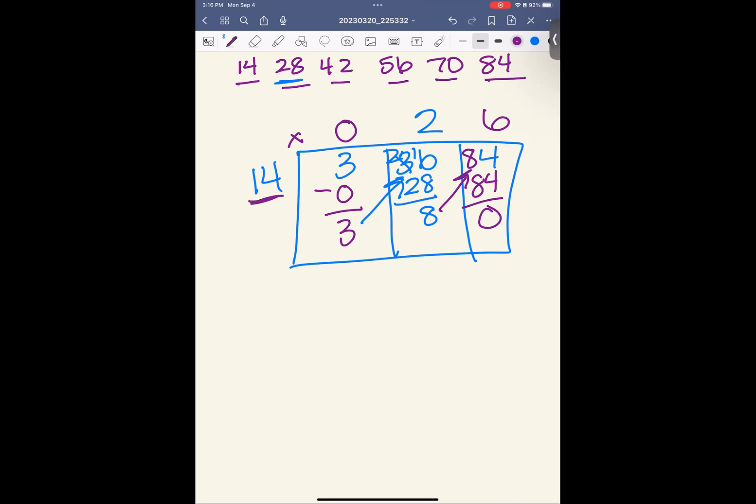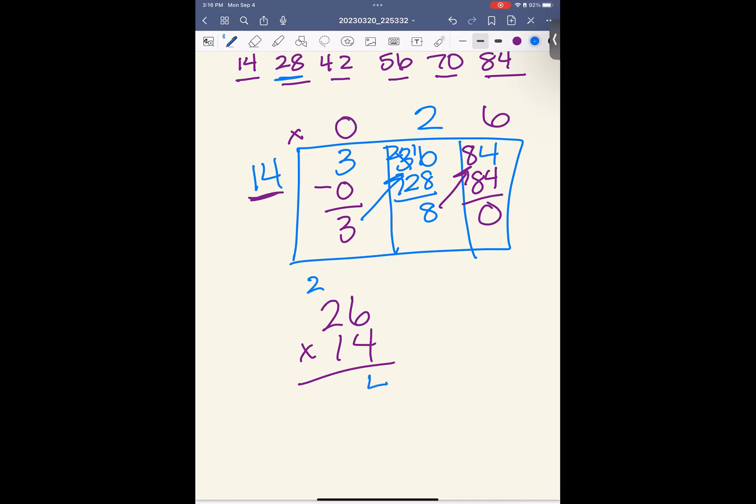Again, you don't have to take my word for it. You can check your math. 6 times 4 is 24. 4 times 2 is 8. Add 2 is 10. Switch our colors here. Place saving 0. 6 times 1 is 6. 1 times 2 is 2. We have 4, 6, 3. It checks.